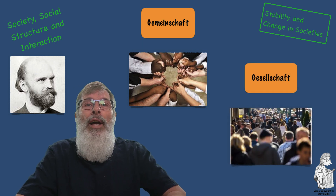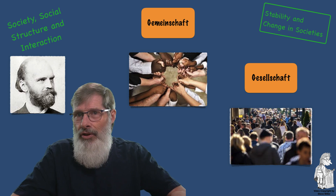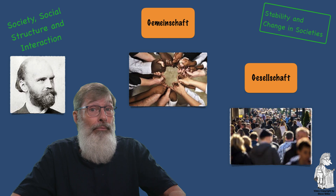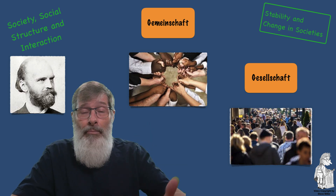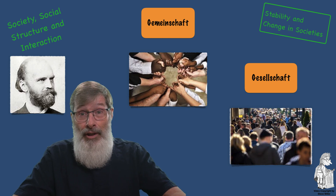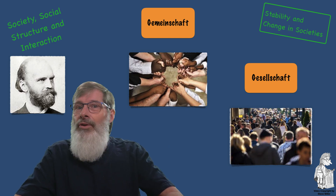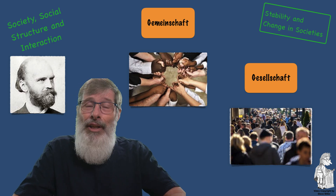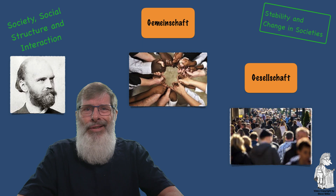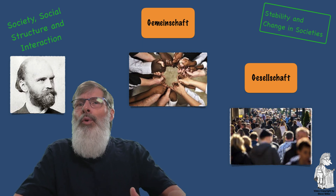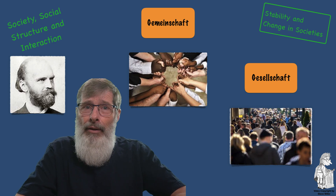Gesellschaft is a large urban society in which social bonds are based on impersonal and specialized relationships, with very little long-term commitment to the group or consensus on values. Most people are strangers — if you walk around a major city, you recognize very few people. Self-interest dominates and little consensus exists regarding values. Tönnies used the German term Gesellschaft because it means association. Relationships are based on achieved status and interactions among people are both rational and calculated, less personal.